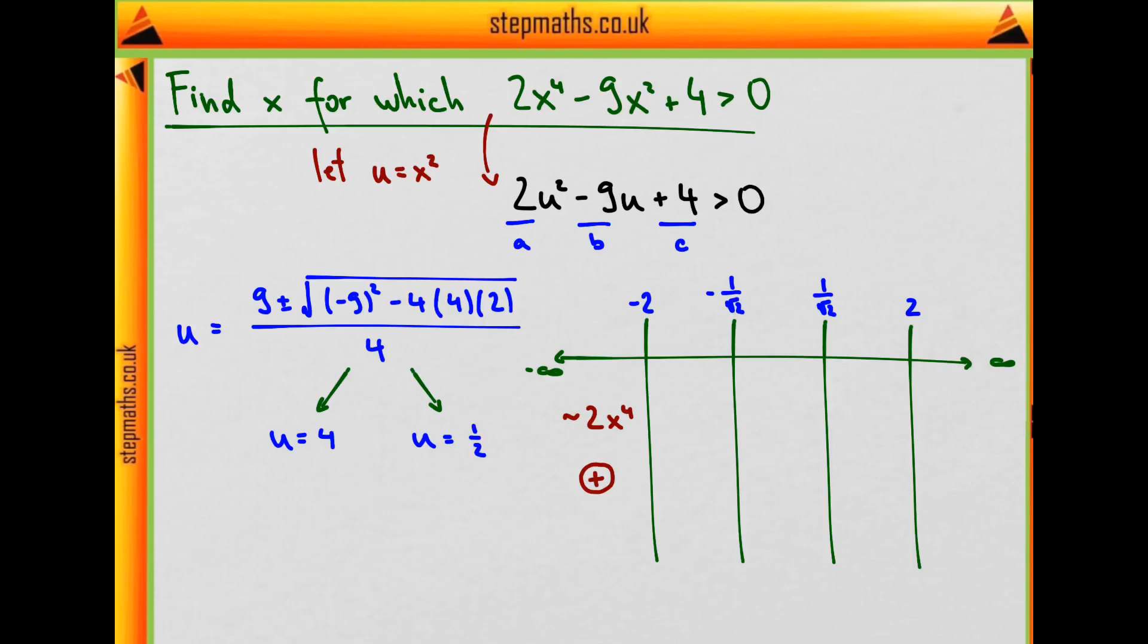For big negative numbers, the first term becomes dominant, and the expression is basically 2x to the fourth power. Which, when we plug in very big negative numbers, still gives us positive numbers because of this even power. So on this interval, from negative 2 to negative infinity, the expression here is positive.